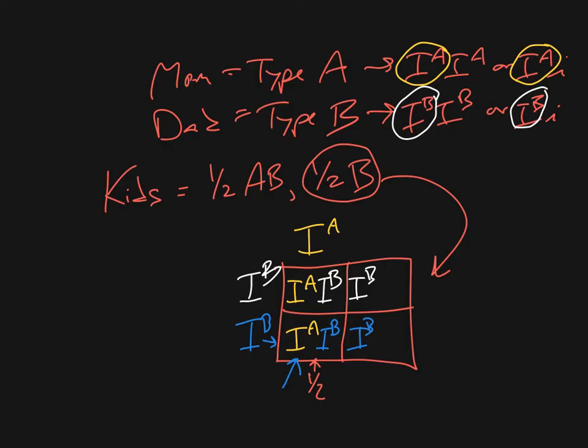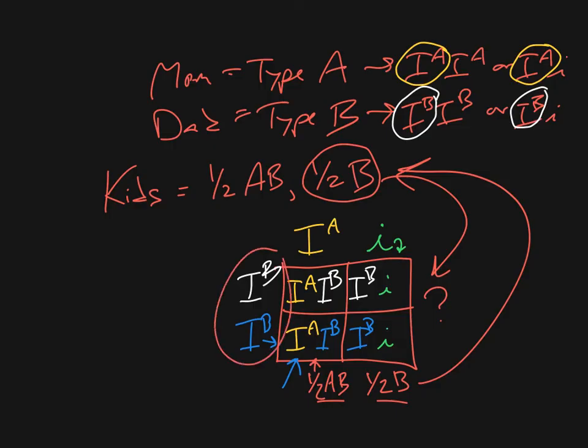Now the other thing we have to make true is we need to make half of them type B. So is there a way that we can make these two kids type B? Sure, right? And the way that works is that we have an O allele here. They'll drop down there and drop down there. So now we've got half of our kids type B. We've got half of our kids AB. So we met that requirement. We've got a dad here who is type B, and a mom here who is type A.